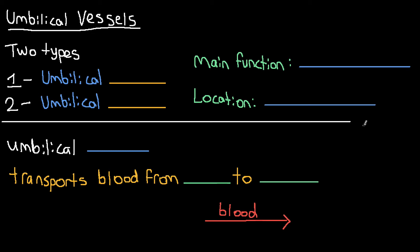This video is going to give a brief overview of the umbilical vessels including their functions and their locations. When we're talking about umbilical vessels, we're talking about two main types. The first one is the umbilical vein and the second one is the umbilical arteries.